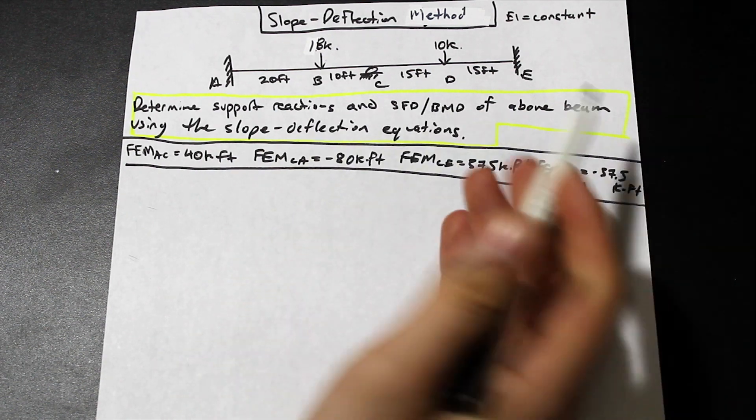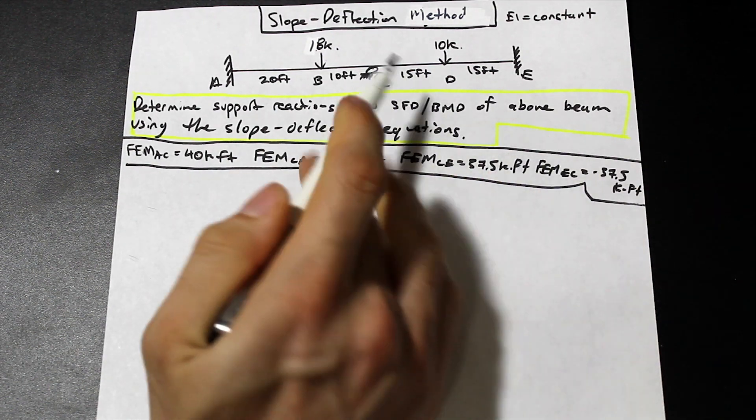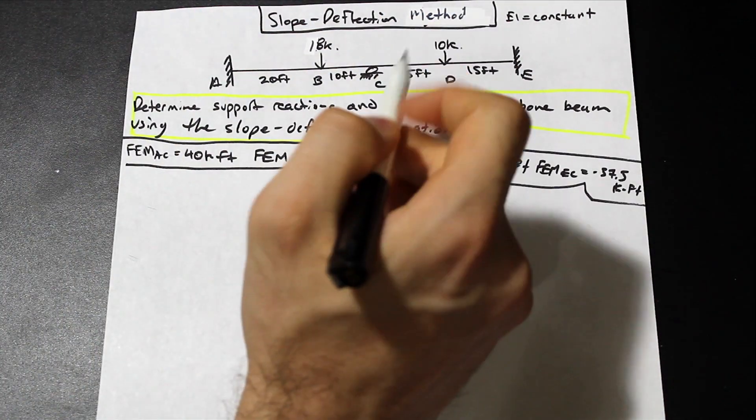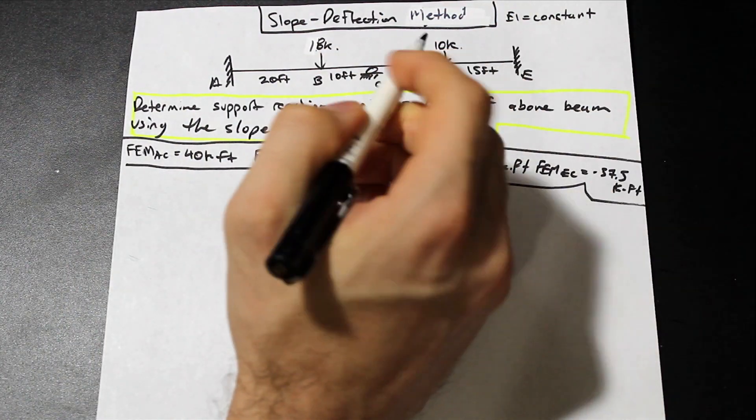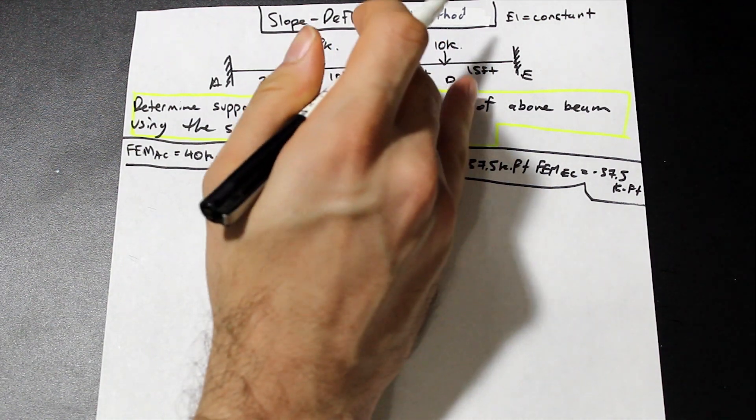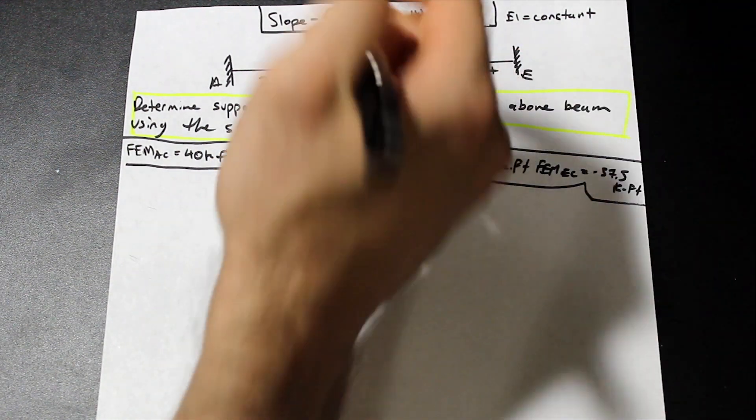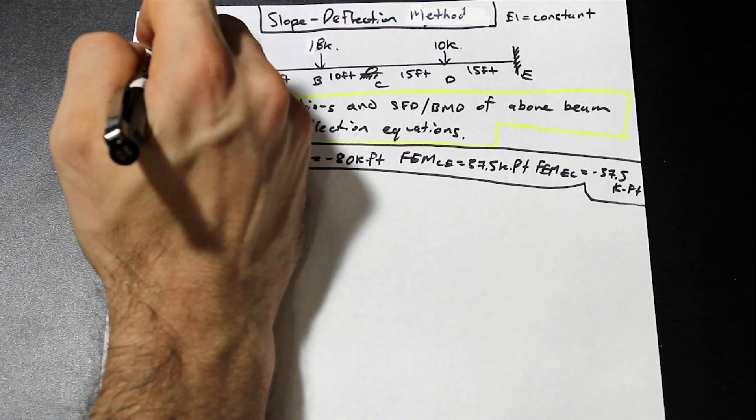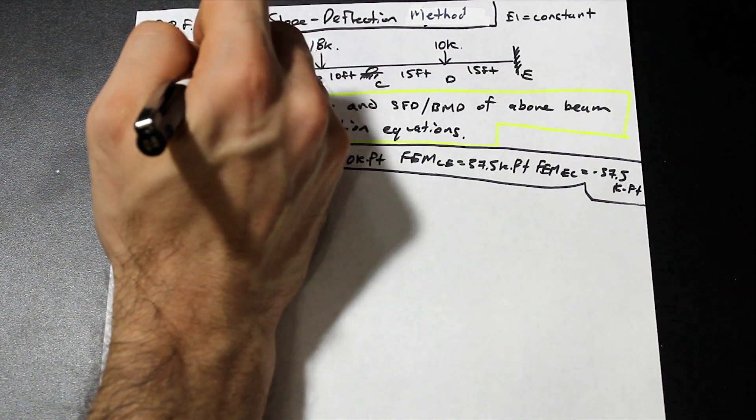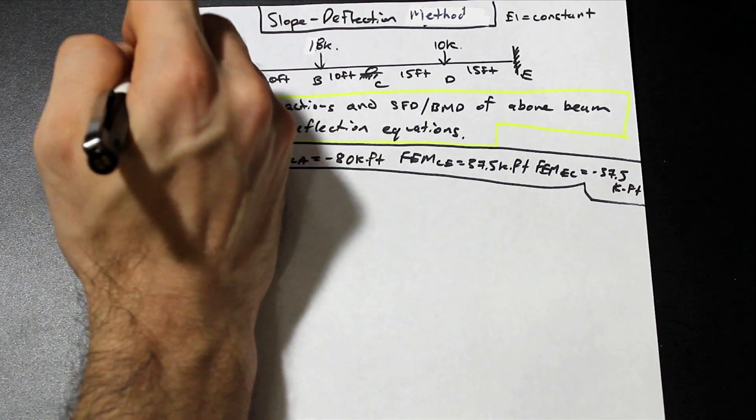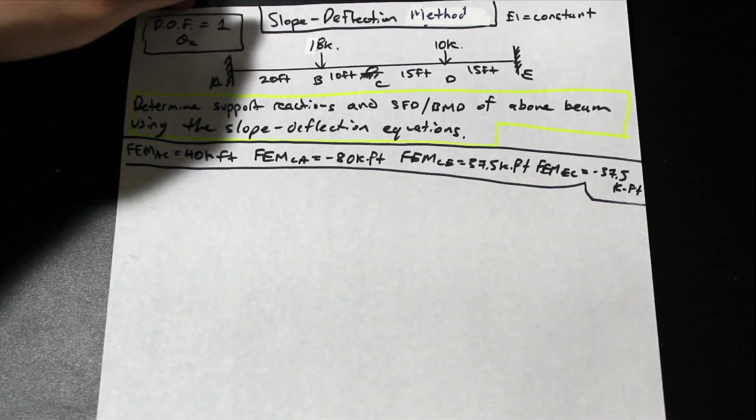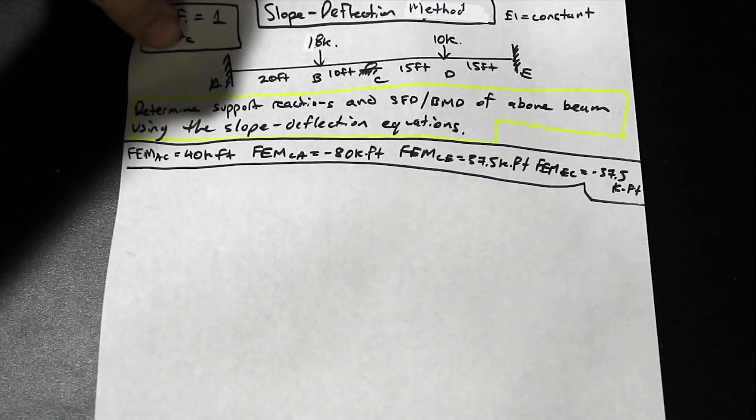We're asked to find the support reactions and the shear force diagram and the bending moment diagram of this beam using the slope deflection equation. So, first thing to do is to find the number of degrees of freedom on this beam in terms of rotation, and the beam is actually free to rotate at point C only. Actually, these two are restrained, so we're going to say degree of freedom equals 1, θC. So that's kind of what we're looking for. That's also going to determine the number of equilibrium equations we have, but we'll get to that in a second.